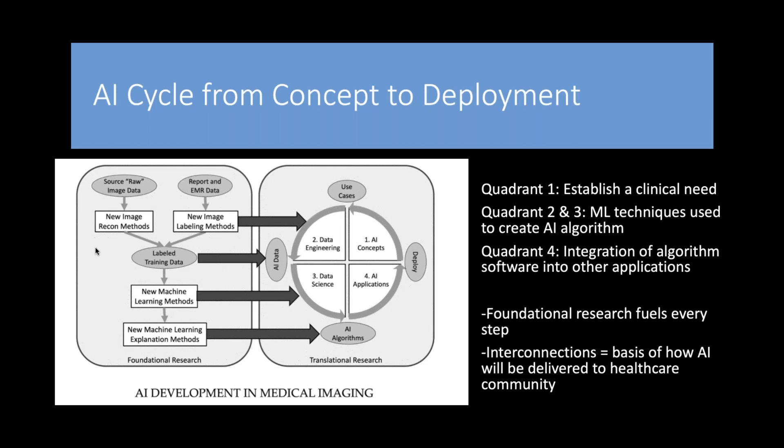The article discusses the cycle of AI from concept to deployment. It is based on foundational research that fuels every step. Quadrant one focuses on establishing clinical need; quadrants two and three focus on machine learning techniques for creating AI algorithms; quadrant four focuses on integrating the algorithm into applications to fulfill the audience's needs. The interconnections from foundational to translational research form the basis of how AI will be delivered to the healthcare community.